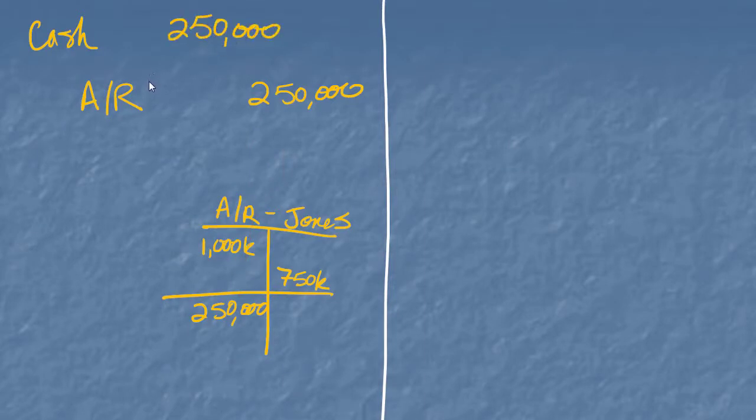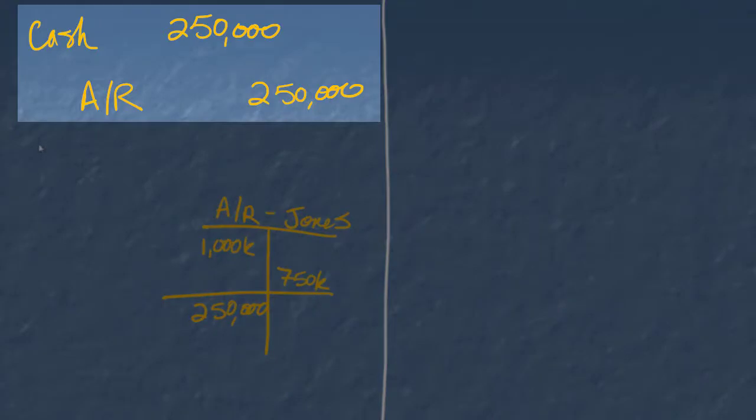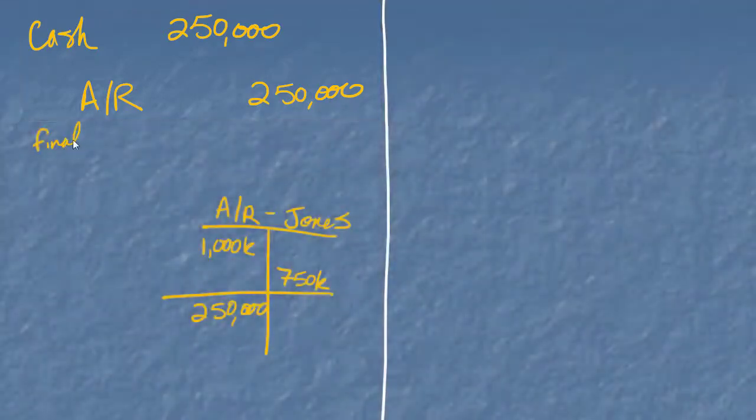And so they're going to pay me that full amount. And in a gross method, I assumed they were going to have to pay me the full amount. So I don't need any other account in here. It balances perfectly. Final payment from Jones.